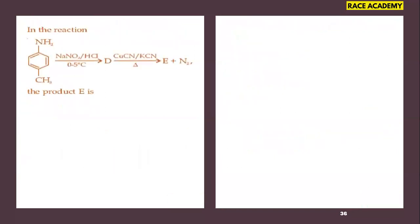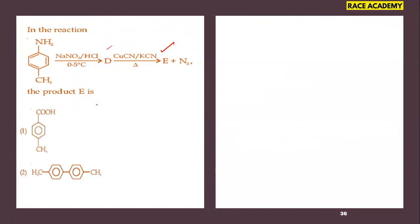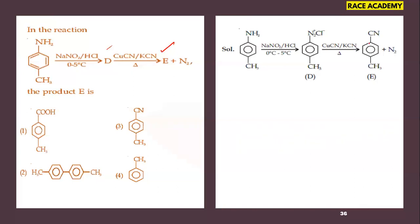In the next reaction sequence, compound E is to be found. The first step uses sodium nitrite and HCl at 0°C — diazotization takes place to give a diazonium salt. The diazonium salt then undergoes the Sandmeyer reaction, replacing the diazonium group with a cyanide (CN) group. The CN group at the para position matches our third option, which is the right answer.